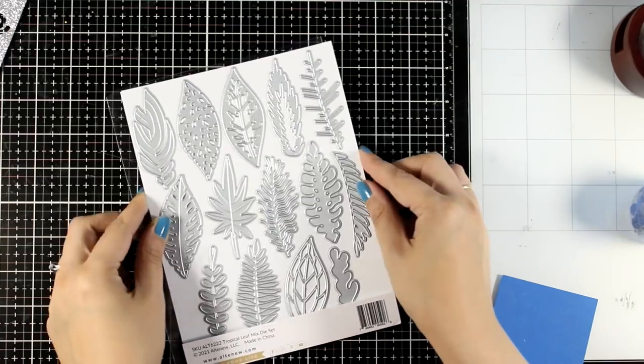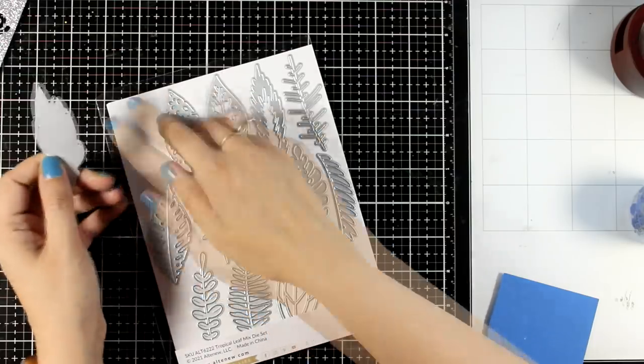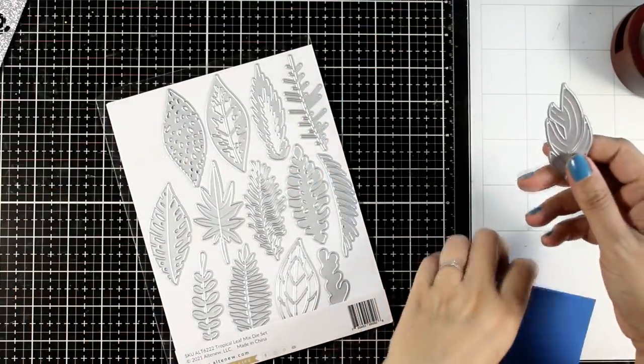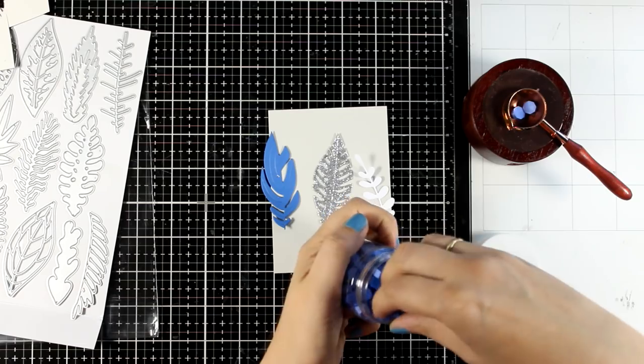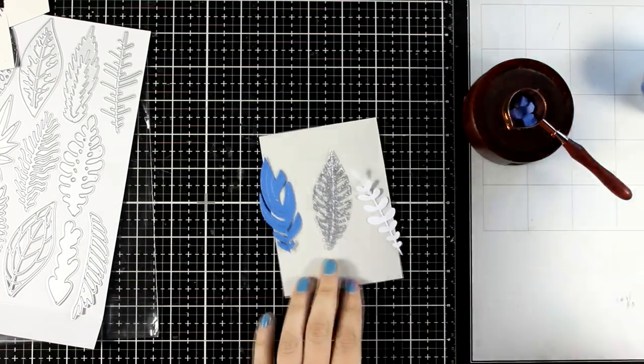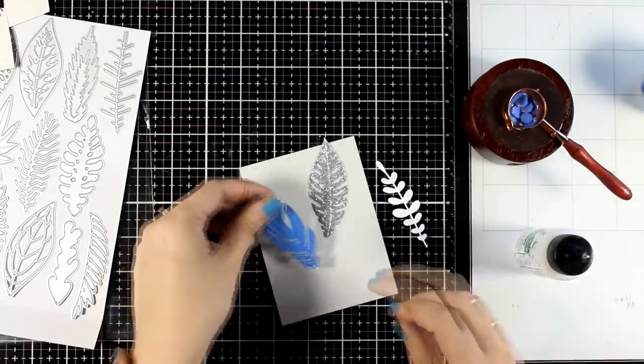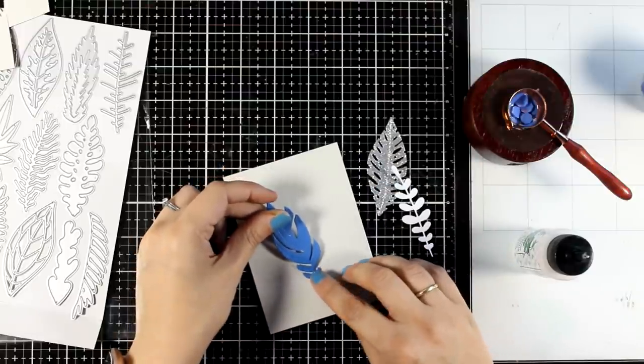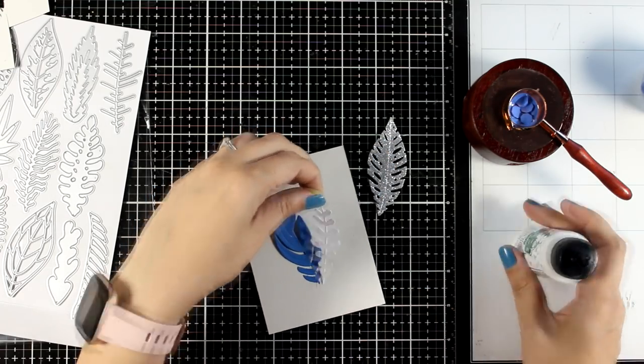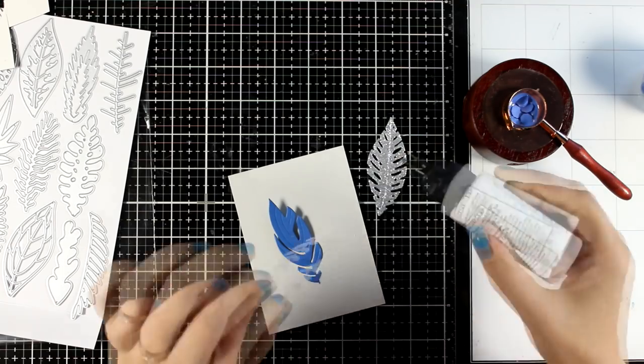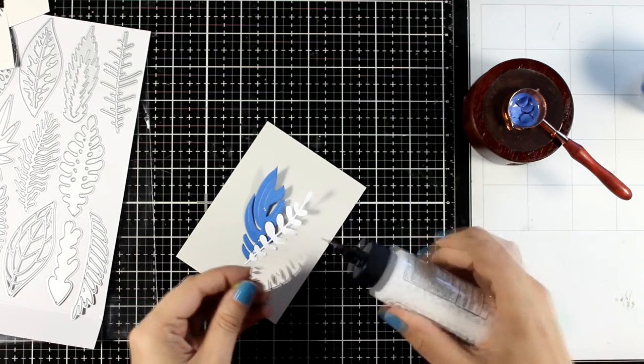This time I'm using leaves from this lovely die set. This is called Tropical Leaf Mixed Die Set. I absolutely love the completely unique designs of these leaves. I'm going to choose three of them and cut them out from blue cardstock, white cardstock and silver glitter cardstock. This time I'm going with blue beads for my wax and I'm going to create a composition and I will be brave in this card. I'm going to pour the wax directly on top of my elements. So I'm just going to temporarily add here one on top of the other to create the composition so I know exactly where I am supposed to pour the wax.